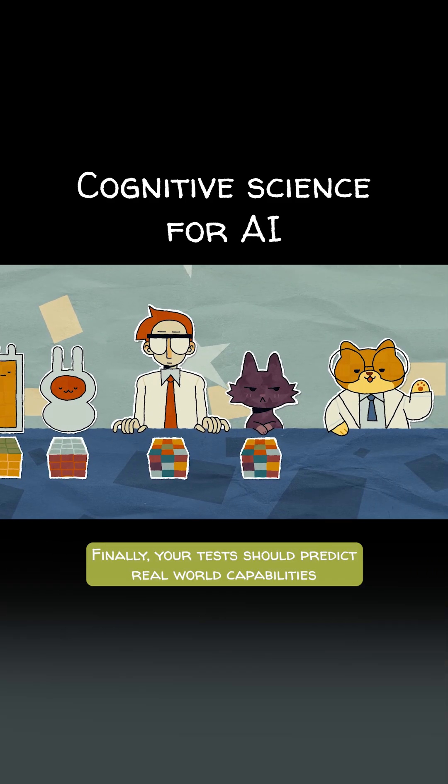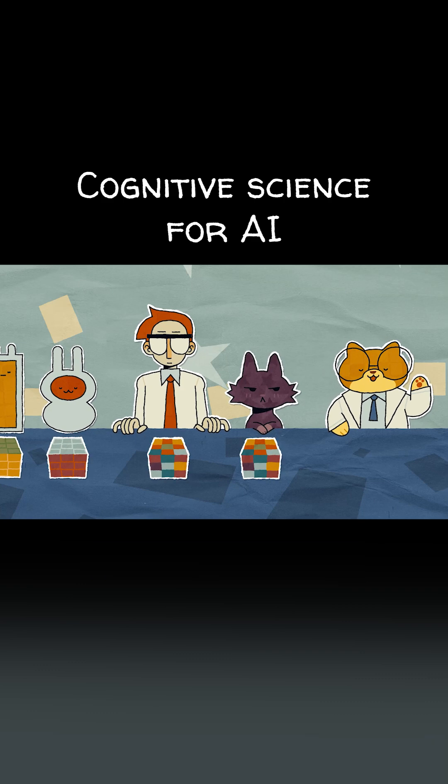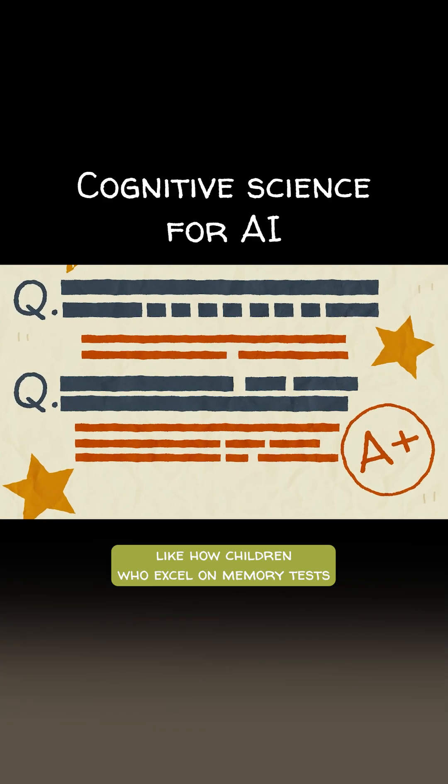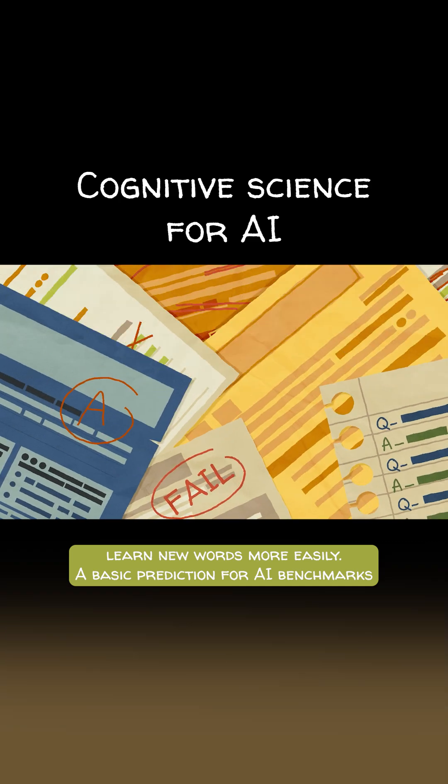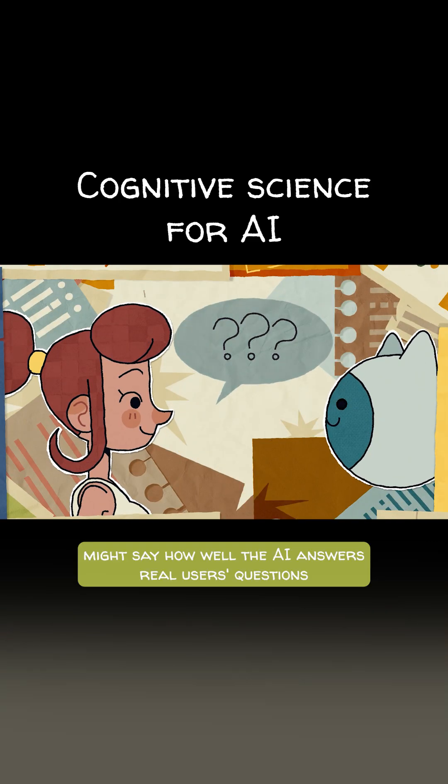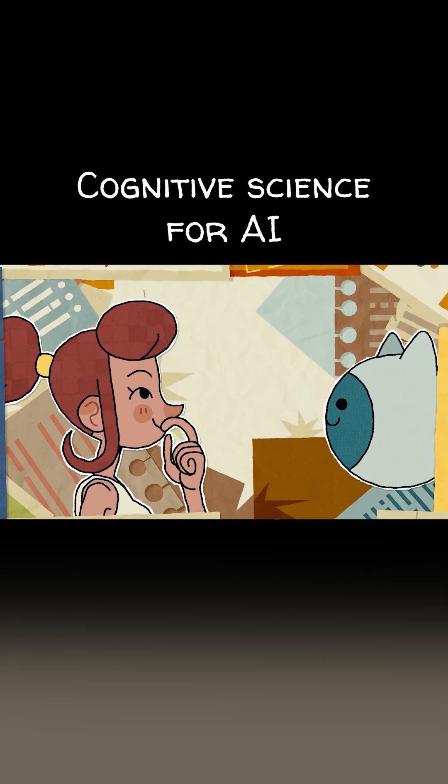Finally, your test should predict real-world capabilities, like how children who excel on memory tests learn new words more easily. A basic prediction for AI benchmarks might say how well the AI answers real users' questions on the same topic.